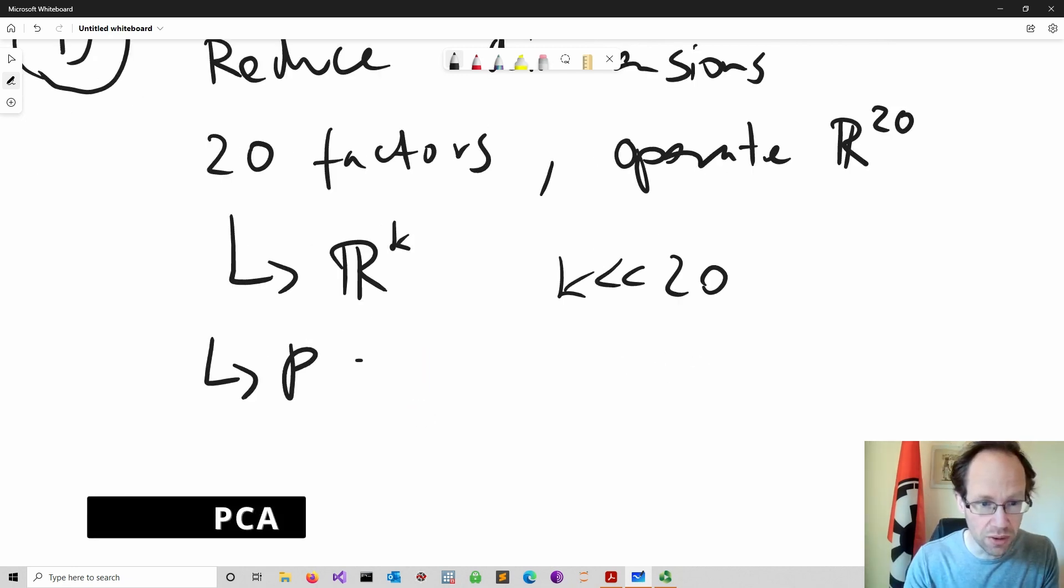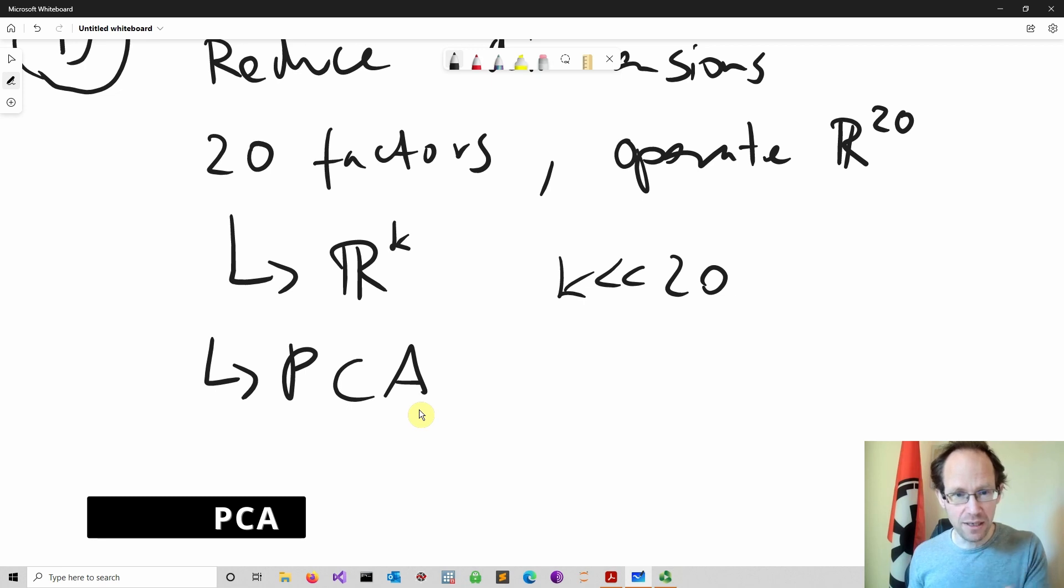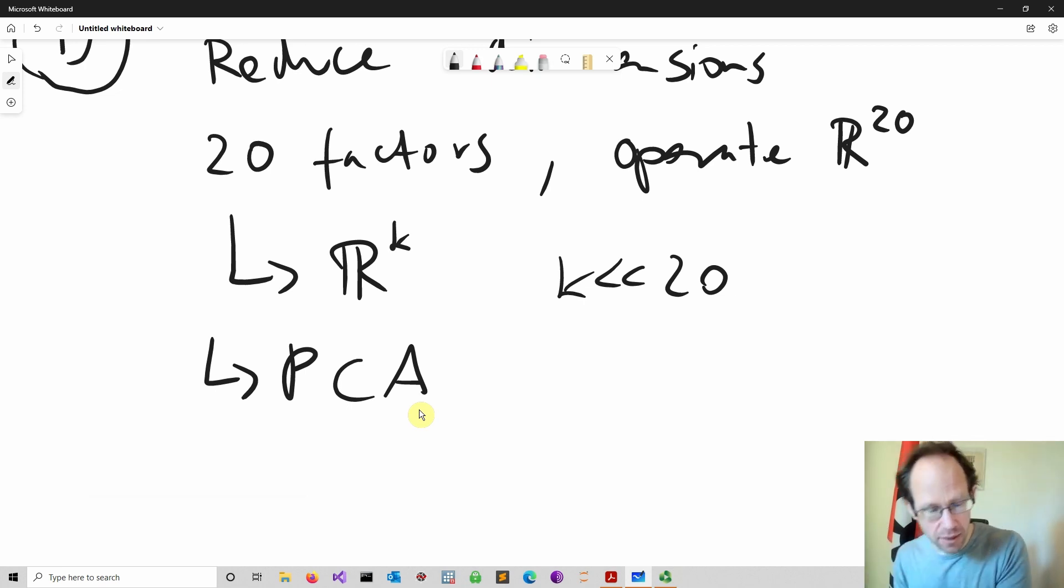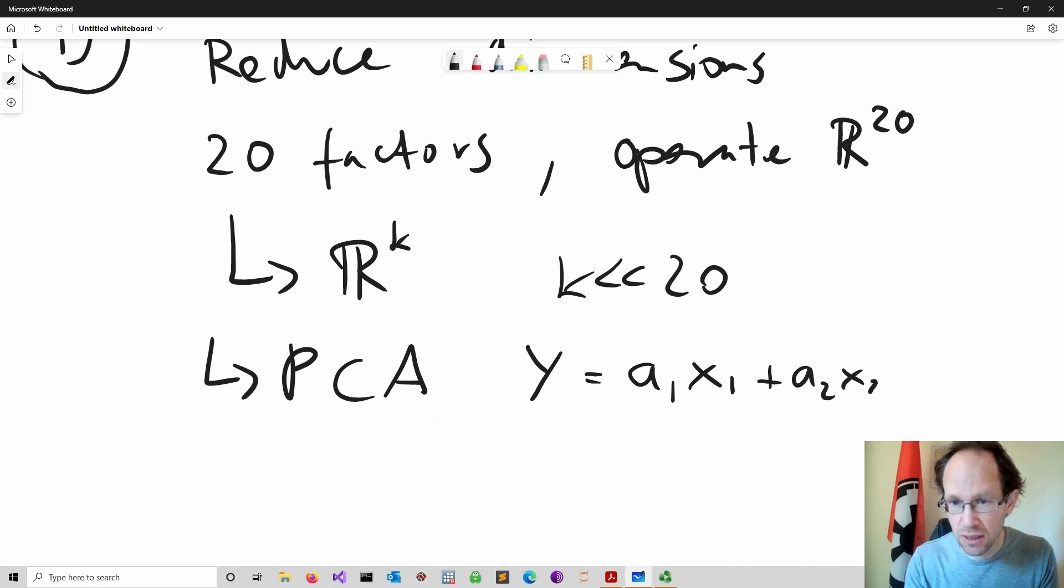Principal component analysis: the idea behind principal component analysis is you have a linear combination of these factors that give me an index or a principal component. So in this case you might be able to write an index Y as a1 times x1 where x1 is your first factor, then you have a second factor here, and the principal component analysis will help me to justify these weights here.